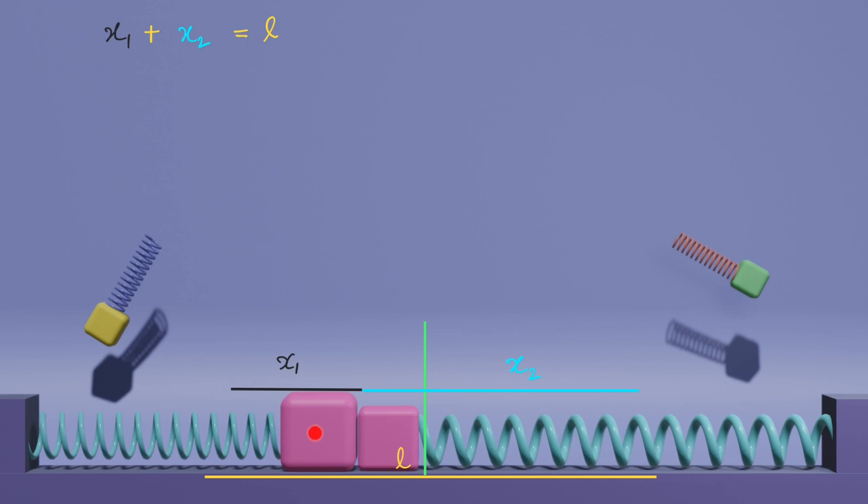If x1 is the displacement of 2m and x2 is the displacement of m, we can say x1 plus x2 equals L. First consider mass 2m. Its distance from the mean position initially is L by 2. We can say at time t, its distance from the mean position will be L by 2 cos omega t. So we can say x1 is L by 2 minus L by 2 cos omega t. Similarly, x2 equals L by 2 minus L by 2 cos 2 omega t.